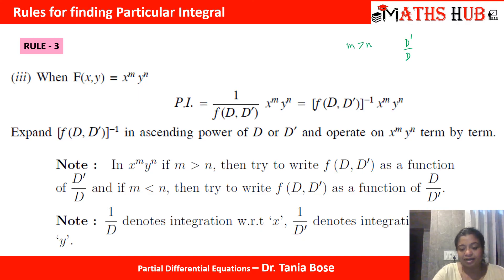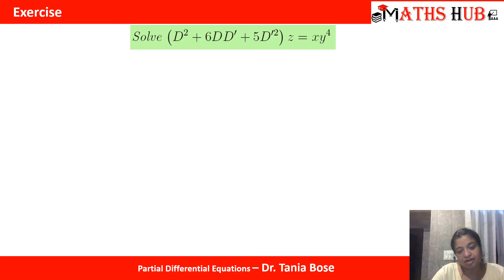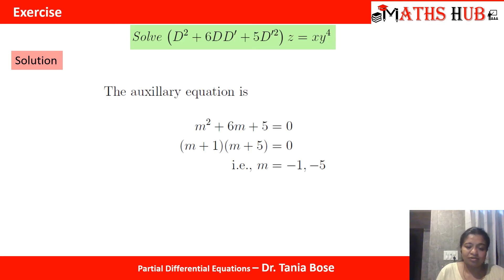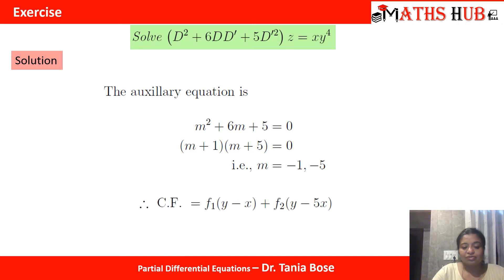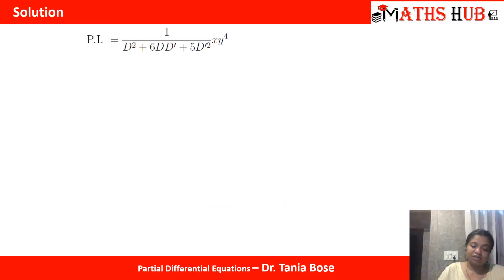Let's try the first problem: solve (D² + 6DD' + 5D'²)z = x·y⁴. The first step is to calculate the complementary function. We frame the algebraic expression as m² + 6m + 5 = 0, giving m = −1 and m = −5. So the complementary solution becomes f₁(y − x) + f₂(y − 5x).